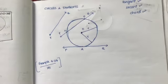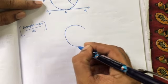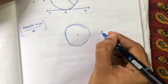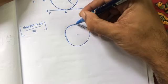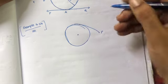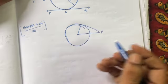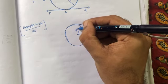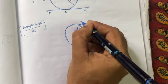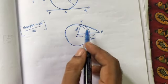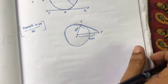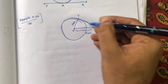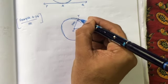Let's draw a circle. The external point is P. We draw a tangent from point P to the circle, touching at point T. The distance OP is 5 cm and the radius OT is 3 cm. They are asking for the length PT. We can see that triangle OTP is formed, and we know that the radius is always perpendicular to the tangent — so angle OTP is 90 degrees.